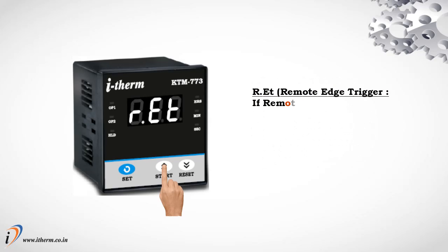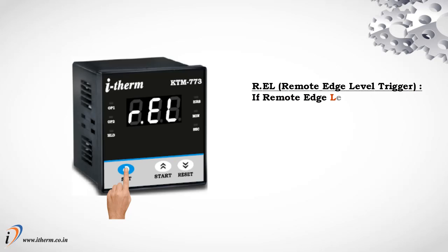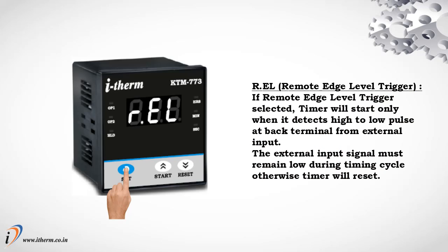Remote Edge Trigger: if selected, timer will start only when it detects a high-to-low pulse at the back terminal from external input. Remote Edge Level Trigger: if selected, timer will start only when it detects a high-to-low pulse at the back terminal from external input, and the external input signal must remain low during the timing cycle, otherwise the timer will reset.